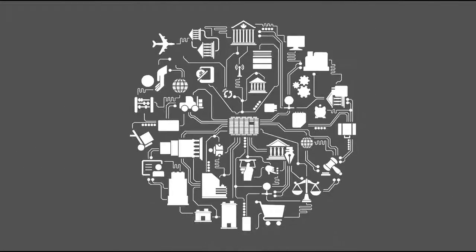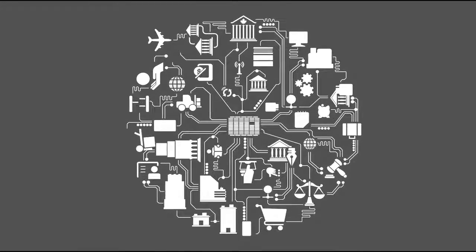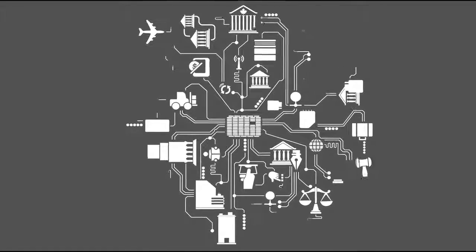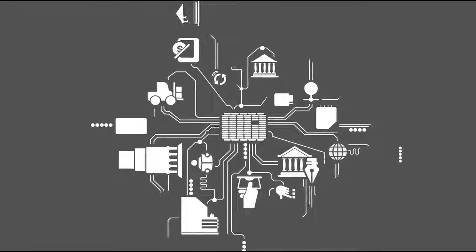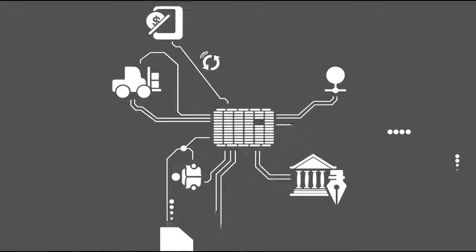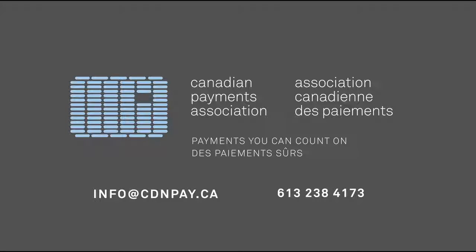We hope you've enjoyed today's presentation, and that you learned a few things you didn't know about AFTs along the way. If you'd like to read more about AFTs, please visit the CPA website, Act and Rules section, where you can find the ACSS rules and standards we discussed today. The answers to many frequently asked questions are available in the FAQ section of the CPA website. If you have a question we haven't addressed, please feel free to contact us, and we'll be happy to provide you with the information you need. You can reach us by email at info@cdnpay.ca or by phone at 613-238-4173.